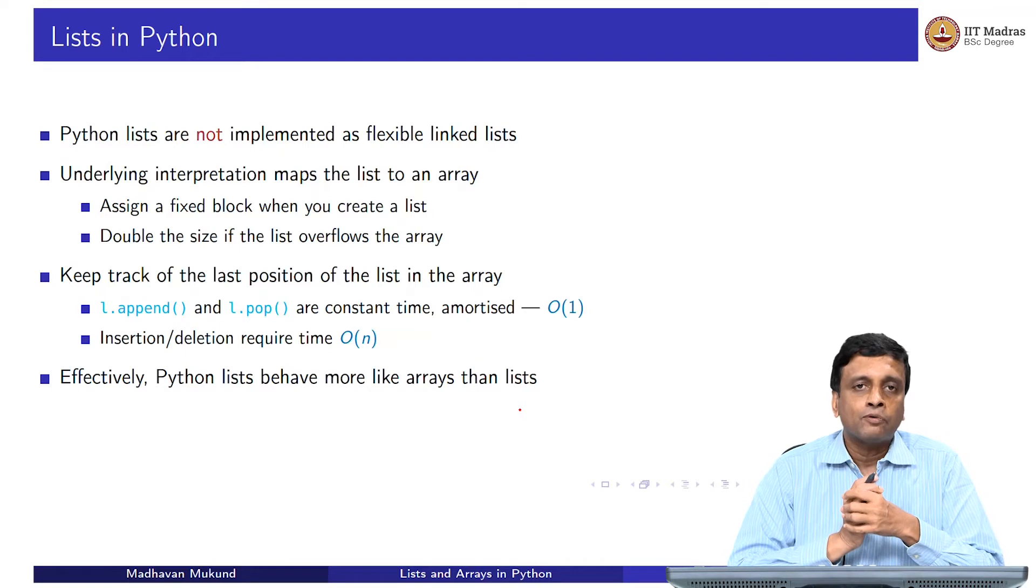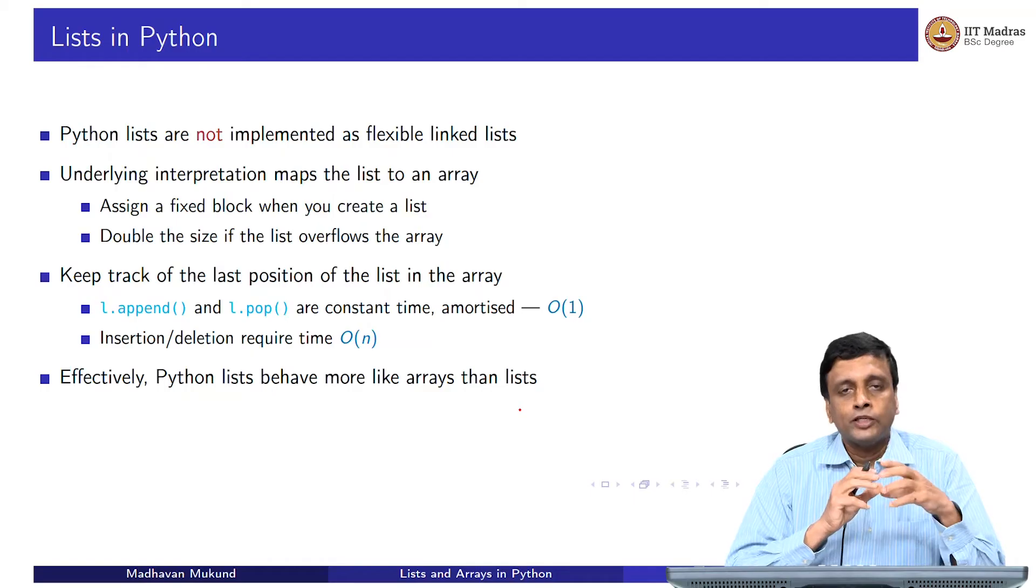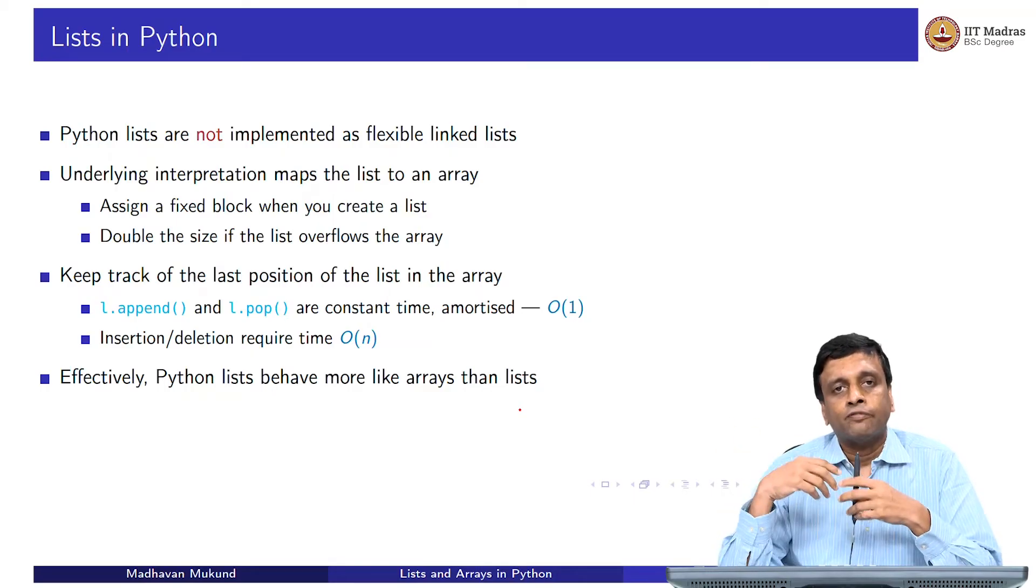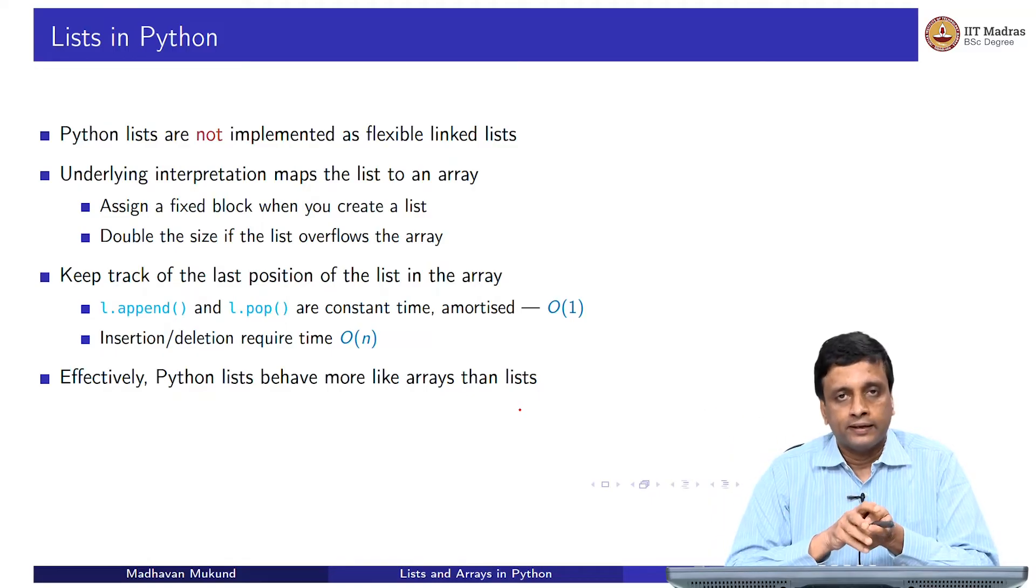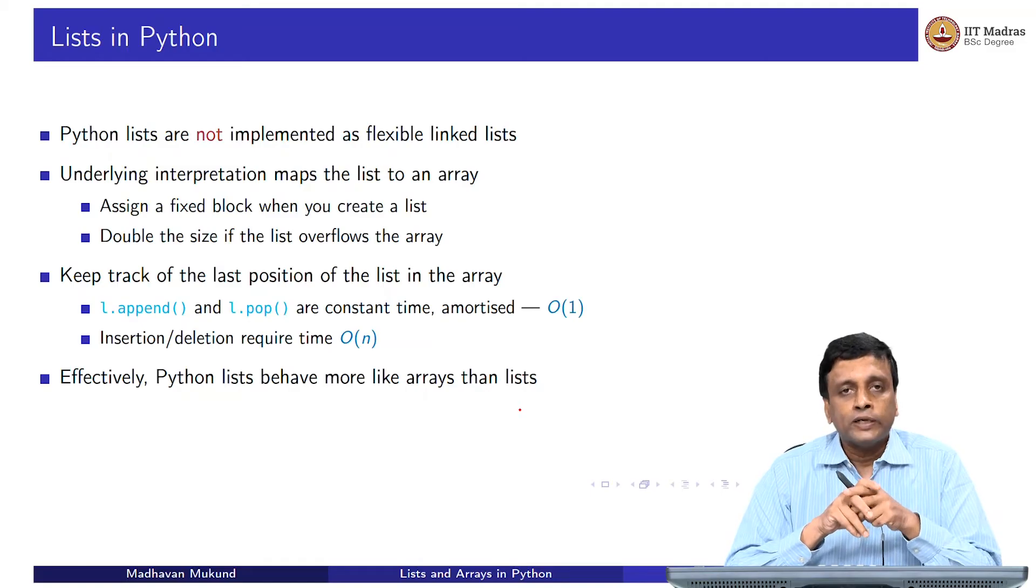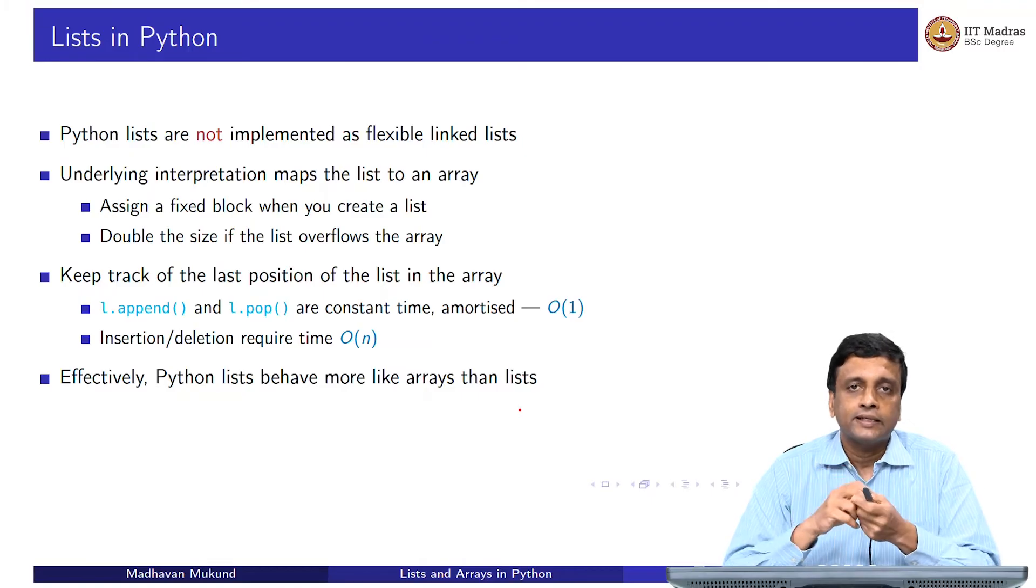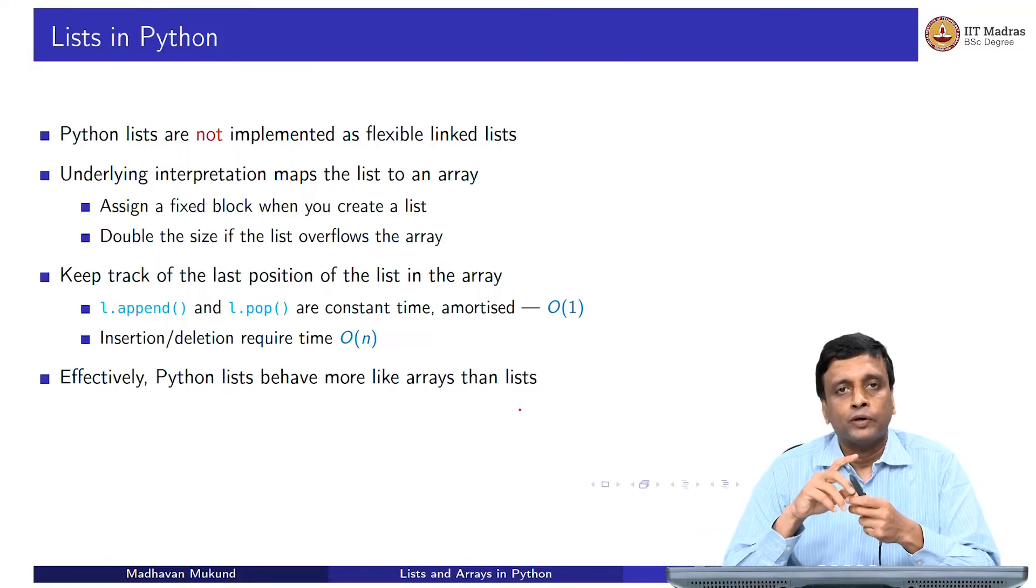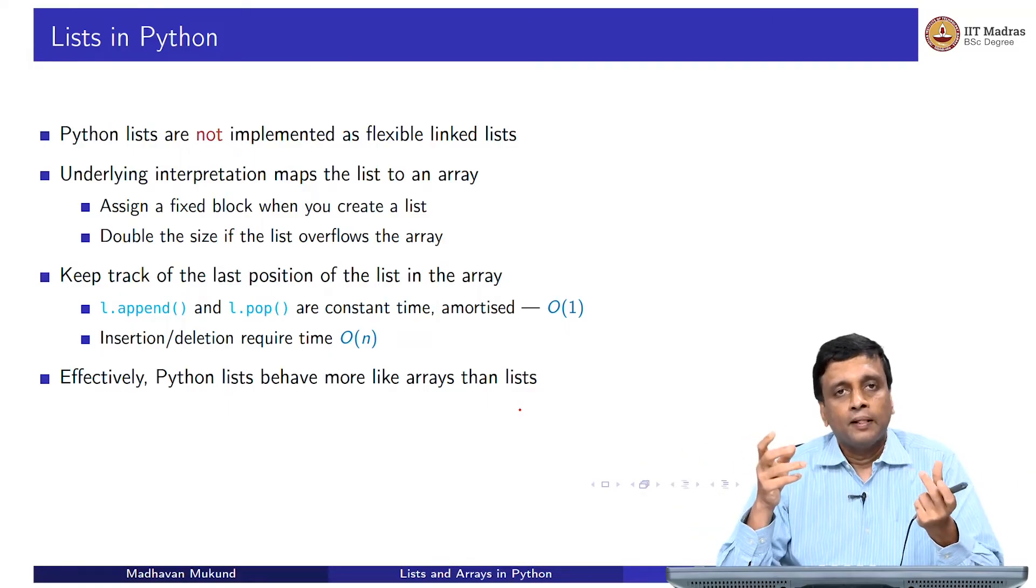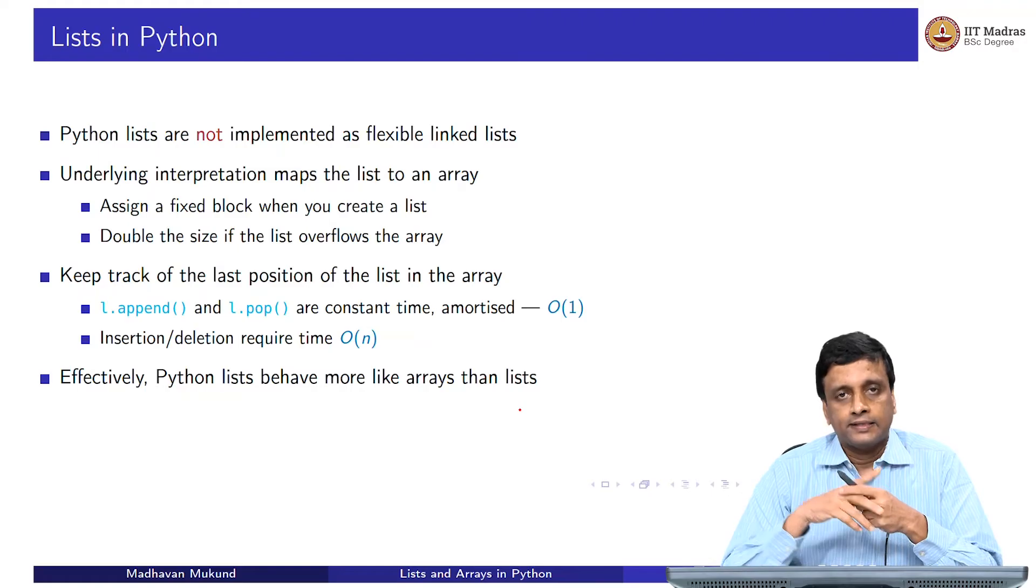Effectively, lists in Python are more like arrays in a normal programming language than lists in a normal programming language. A list in a normal programming language will behave like the flexible linked list structure that we described earlier, where you have these nodes which point to the next node and so on. You start from the head and you have to navigate your way through the list, which will be scattered in memory. That is not how a Python list works. We have programming notation which makes it look like we are dealing with a flexible structure. But the implementation, because most often we use them like arrays, the decision in Python is to keep these as arrays in the underlying implementation.